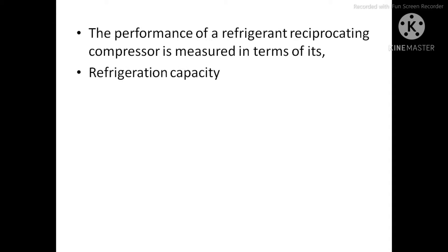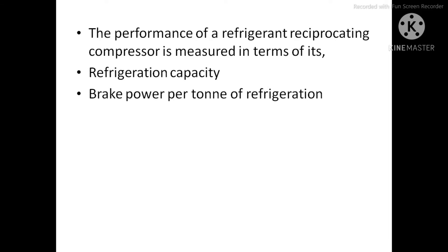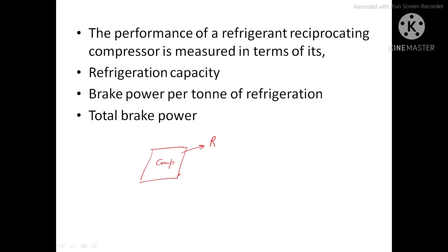The performance of a reciprocating compressor is measured in terms of its refrigeration capacity, brake power per ton of refrigeration, and total brake power. These are the three parameters which indicate the performance of a refrigerant reciprocating compressor.